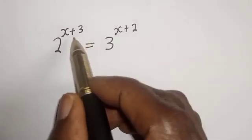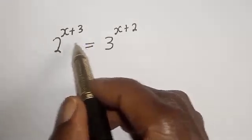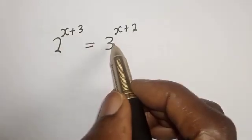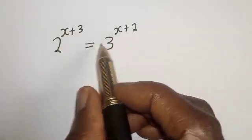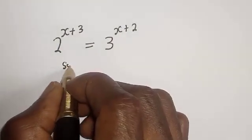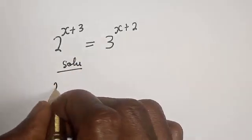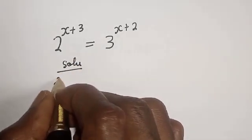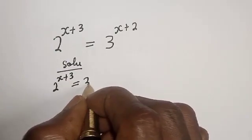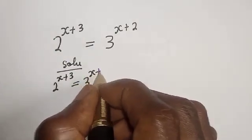Hello. How to solve for s from this given equation: 2 raised to the power x plus 3 is equal to 3 raised to the power x plus 2. Solution: 2 raised to power s plus 3 is equal to 3 raised to power s plus 2.